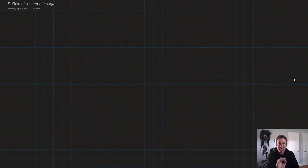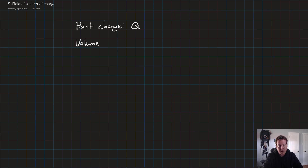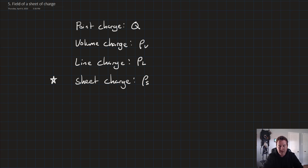Hello and welcome to this lesson on the electric field of a sheet of charge. So far we've almost got all of the different types of charges that we're going to look at in this course. The first one was a point charge, denoted as Q. The second was a volume charge, denoted as rho sub V. The next was a line charge, denoted as rho sub L. And finally, we're going to talk about a sheet charge, denoted as rho sub S.